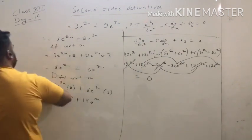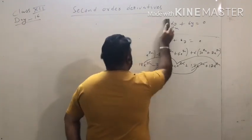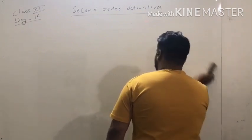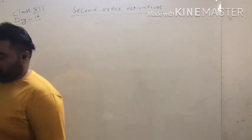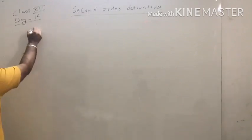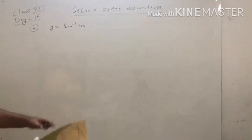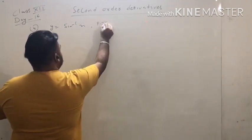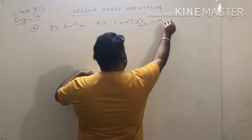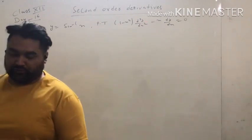Now we shift to the fourth question — a very, very important question. If y equals sin⁻¹x, we have to prove that (1 − x²)y'' − x·(dy/dx) = 0. Very, very important and very easy.